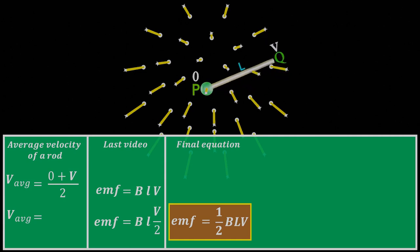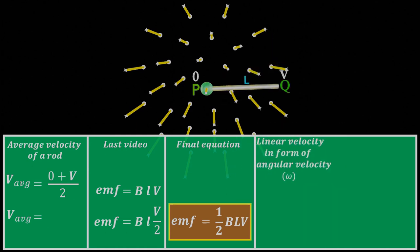As this time, we have a rotating rod, therefore, we should have equation in term of angular velocity also. So, we know that there is a relation between linear velocity and the angular velocity. That is, linear velocity is equal to R times angular velocity ω.